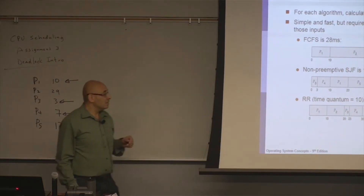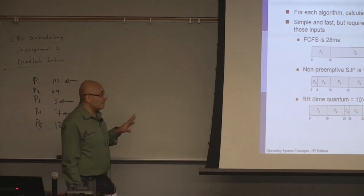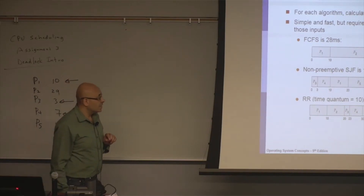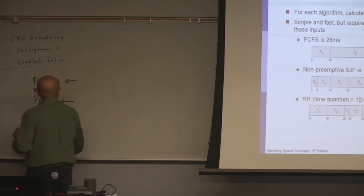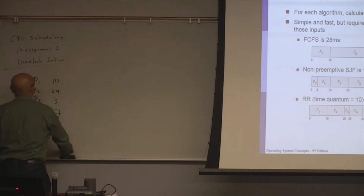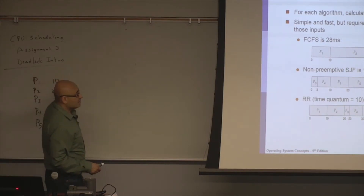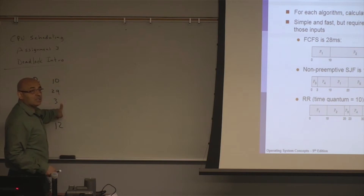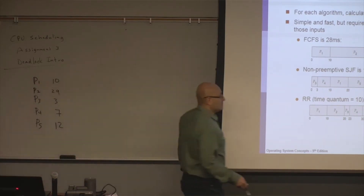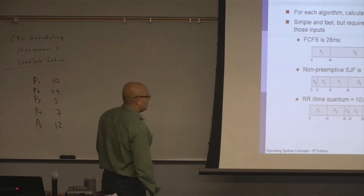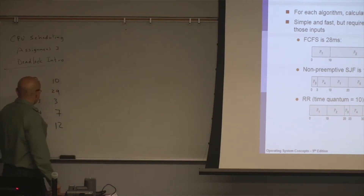For round-robin, this is something you will implement in assignment three. You have to be careful when calculating the average waiting time. With a time quantum of 10, P1 gets 10 time units, then P2 gets 10, then P3 gets 10 but only uses 3, so P3 terminates before the quantum expires. P4 gets 10 but only uses 7, and P5 gets 12.